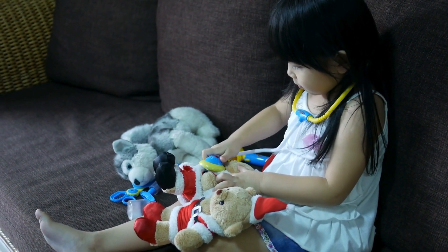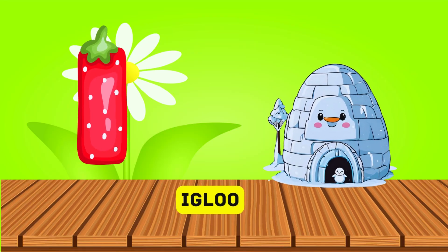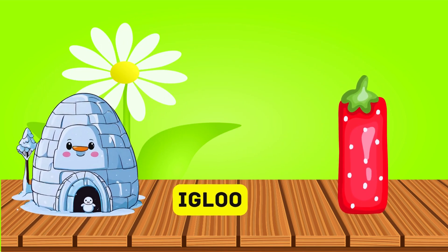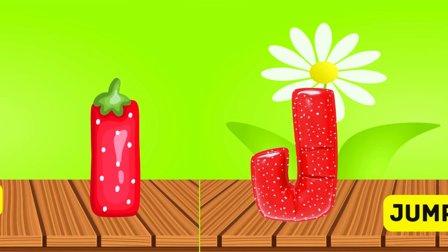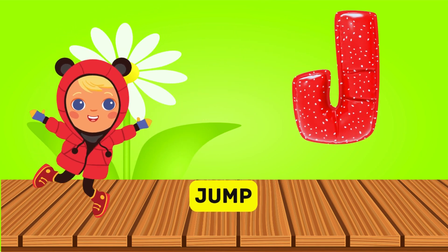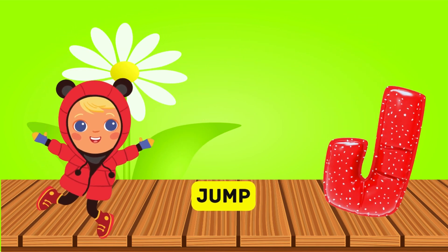I is for igloo, i-i-igloo. J is for jump, j-j-jump.